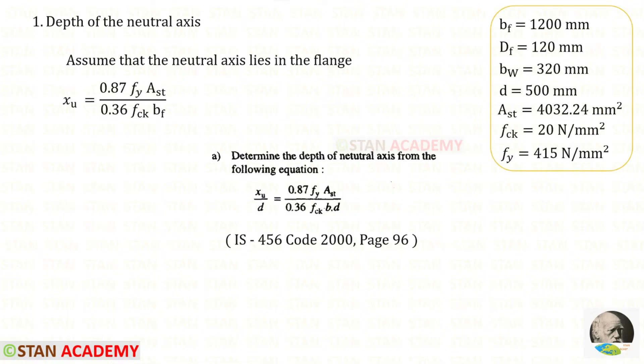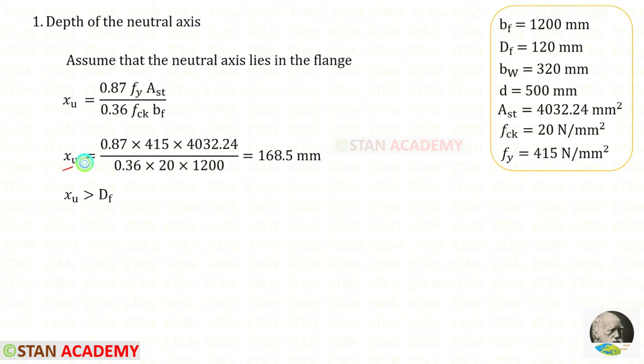First we need to assume that the neutral axis lies in the flange. From the IS 456 code book page number 96 we need to copy this. In this one we can eliminate D and instead of B we have to apply BF. For XU we will get 168.5 which is greater than DF. In this case the assumption is incorrect.